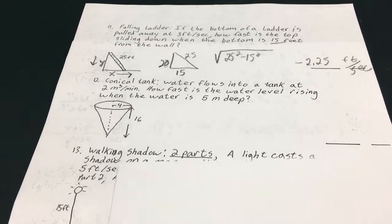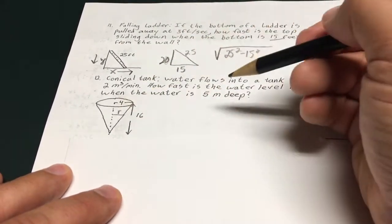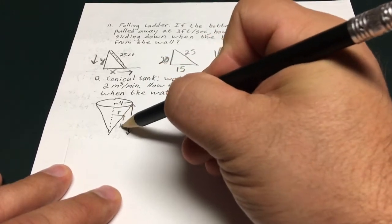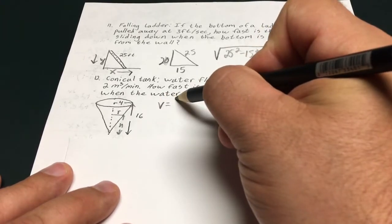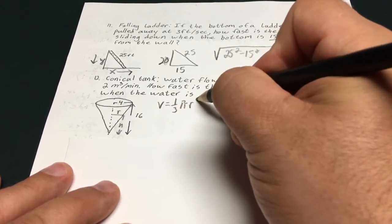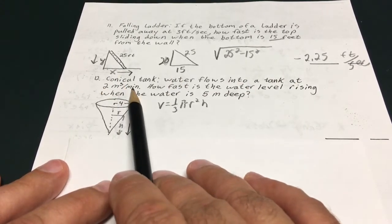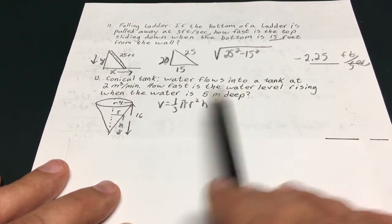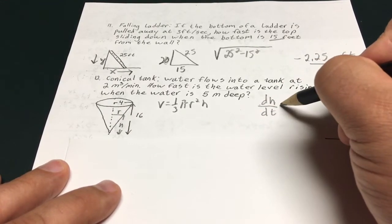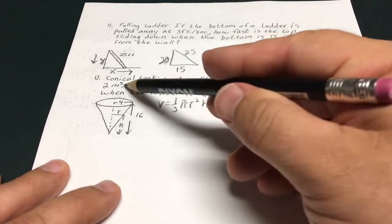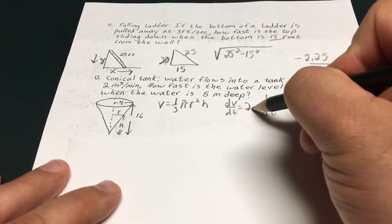The cone problem. The deal with these cones is you want to set up a proportion of the radius to the height and determine later on what you want to solve for. So the volume of a cone equals 1/3 pi r squared h. And water flows into the tank at 2 meters cubed per minute. How fast is the water level rising? So they want to know what dh/dt is. That's what we're looking for here. How fast is the height rising? And they give us the dv/dt. So we know dv/dt. dv/dt in this case equals positive 2.